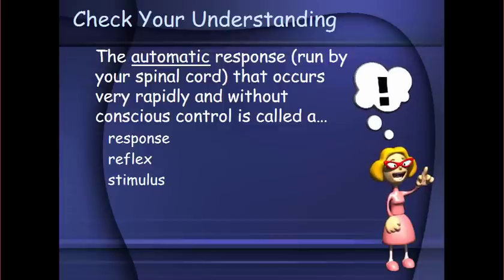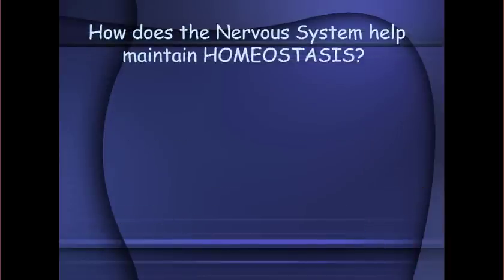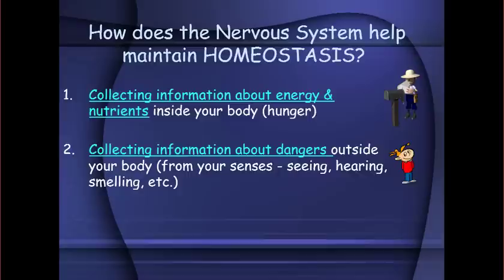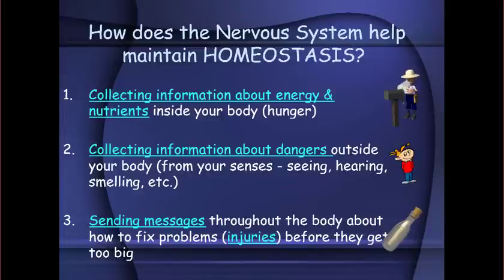How does the nervous system help maintain homeostasis? First, it collects information about the amounts of energy and nutrients inside the body. Second, it collects information about dangers outside the body. Third, it sends messages throughout the body about how to fix problems before they get too big.